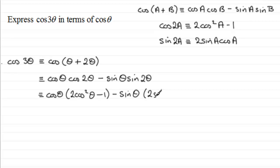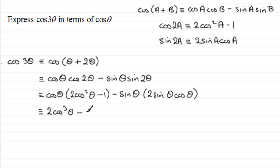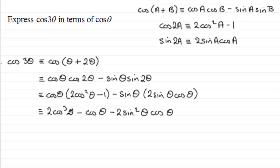Now let's expand the brackets. cos(θ) times 2cos²θ gives 2cos³θ, and cos(θ) times −1 gives −cos(θ). Then we have minus sin(θ) times the whole factor 2sinθ·cosθ, which gives −2sin²θ·cosθ.